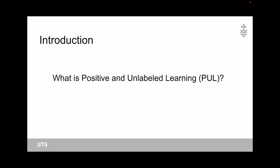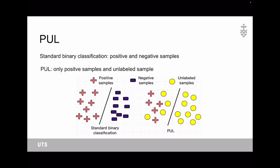The first part is the introduction. It basically answers the question, what is positive and unlabeled learning, which is also called PU learning. Standard binary classifications usually include both labeled positive and negative samples. However, for PU learning, only positive samples and unlabeled samples exist. As you can see in the illustration here, on the left-hand side is the standard binary classification with both labeled positive and negative samples, so it is very easy to classify. On the right-hand side, we can see that only positive samples are labeled and the rest are unlabeled samples.